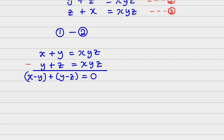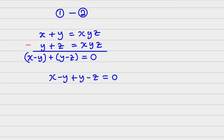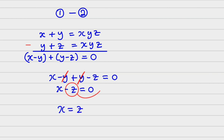Hence, when we open this bracket, we are going to have x minus y plus y minus z is equal to 0. We can conclude, if z moves to this side of the equation, then we are going to have x is equal to z.